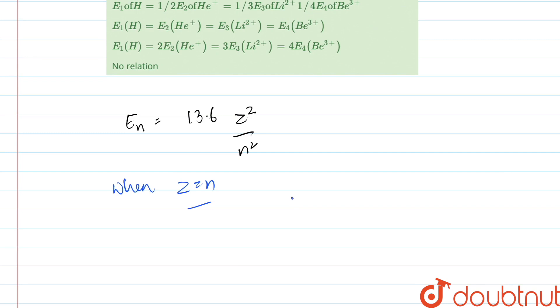When z equals n, the En would come out to be 13.6 electron volts for every ion. This is what will happen when z equals n.